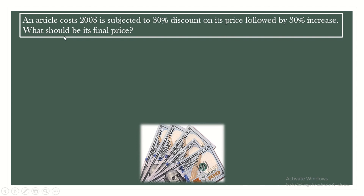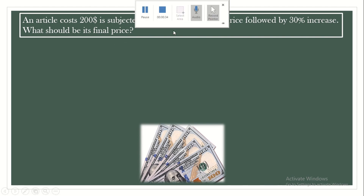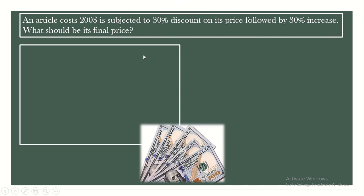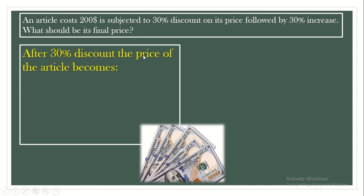An article costs $200. It's subjected to a 30% discount on its price, followed by a 30% increase. What should be its final price? In order to solve such a question, we should solve each step alone. First of all, we have a 30% discount. So here we say: after 30% discount, what should be the price of the article? You must pay attention to the keyword 'discount' — it means minus.